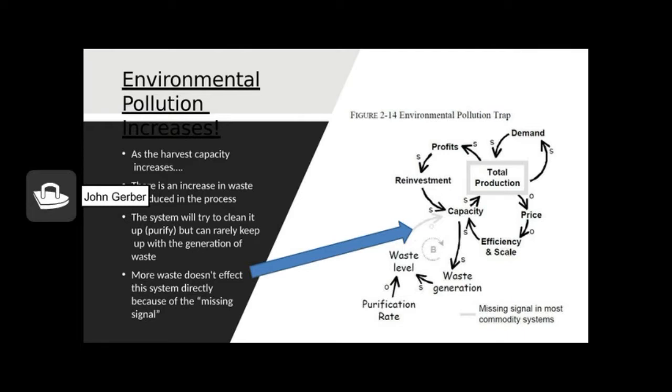So let's go back to our system dynamics model. As capacity increases, waste generation increases. Waste generation increases, the waste level in the system increases. And as the waste level in the system increases, capacity should go down. But you'll notice it's a very light line between waste level and capacity. Problem here is it's a missing signal. We don't see it or we ignore it. The system can purify itself. You see, as purification rate goes up, waste level can go down. The problem is it doesn't go down fast enough.